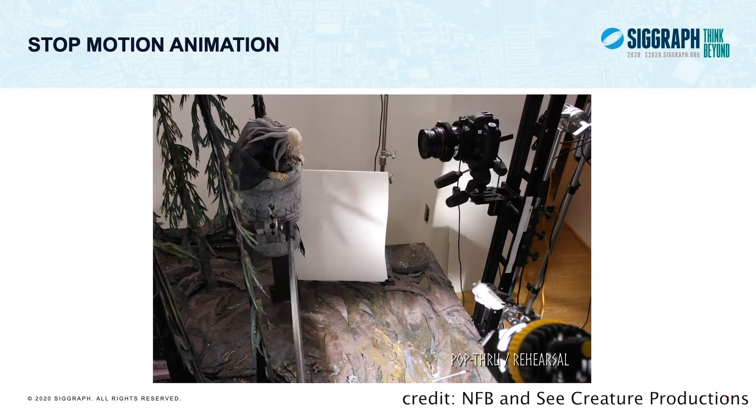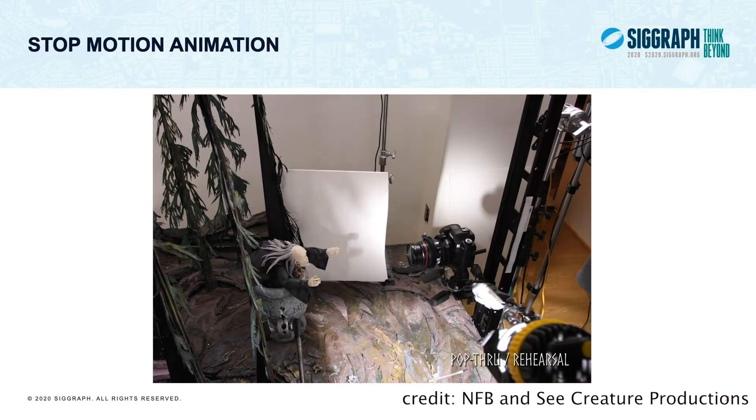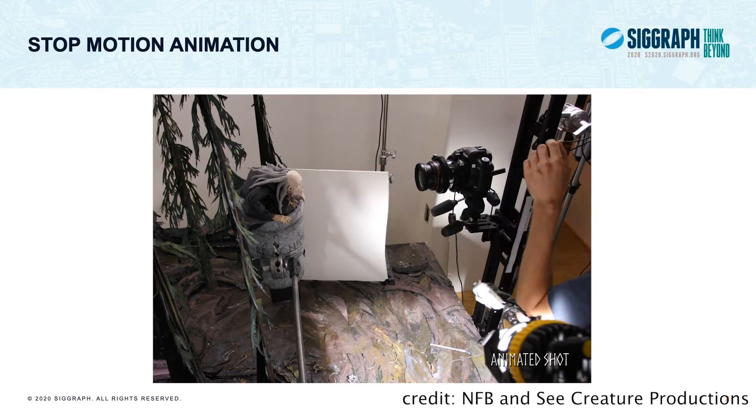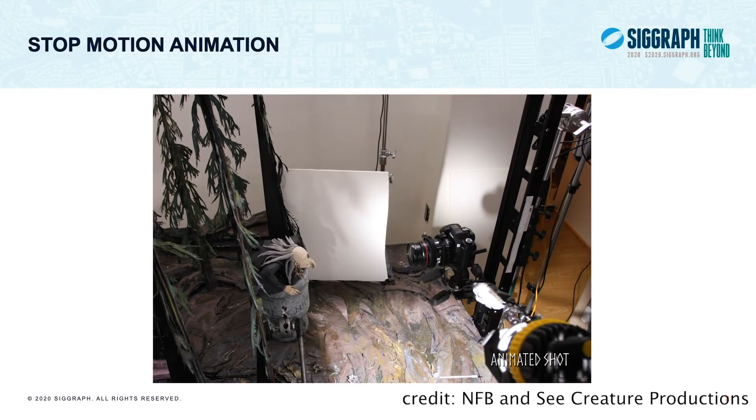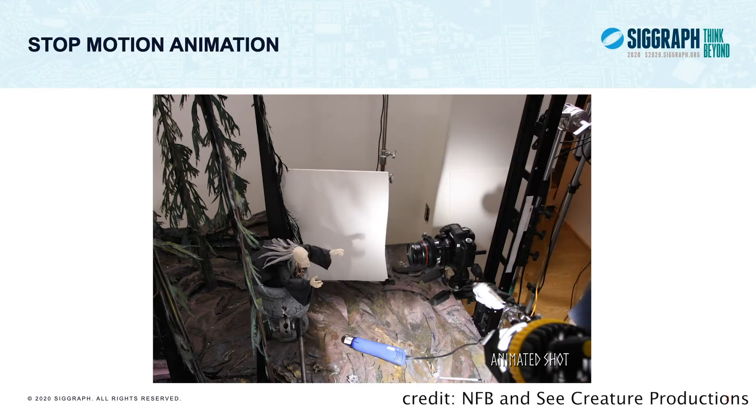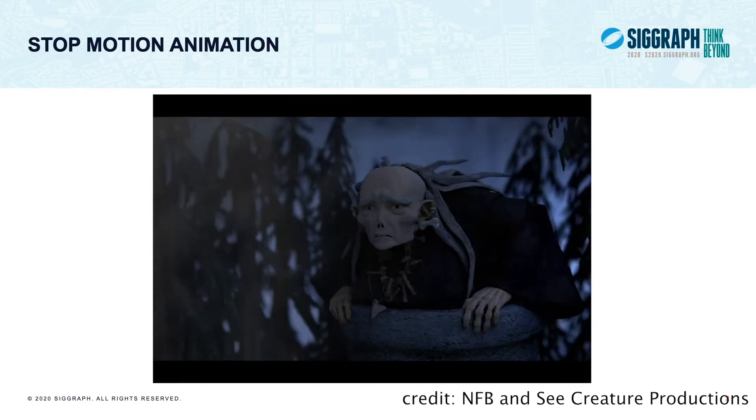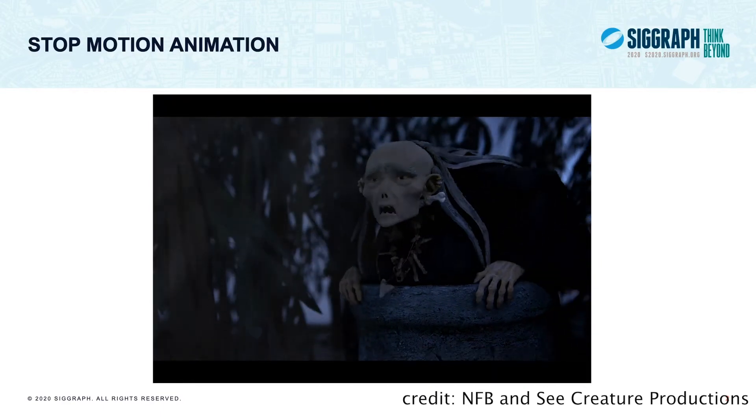Stop-motion is a traditional animation technique that moves a physical object in small increments between photograph frames. When you play back the images consecutively, the objects or characters appear to move on their own. These days, stop-motion animation is used in commercials, music videos, television shows, and feature films.